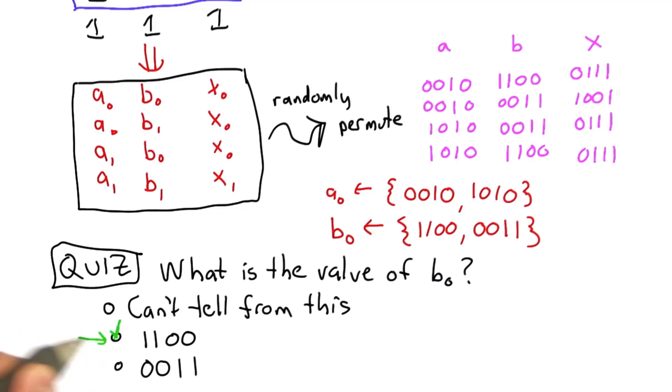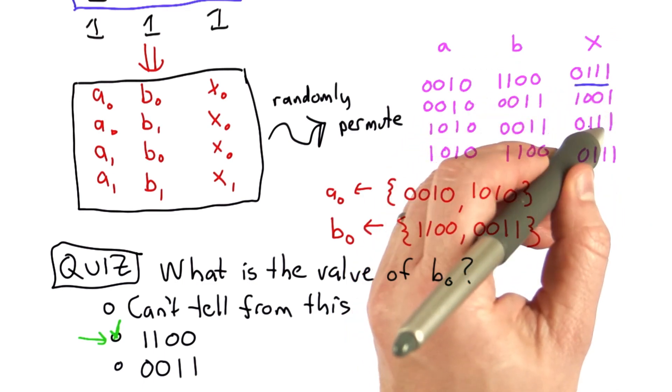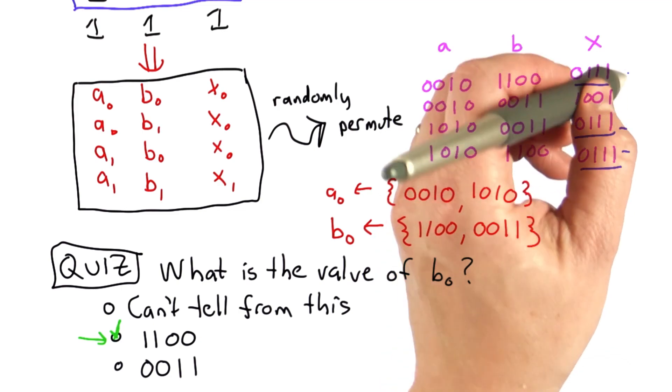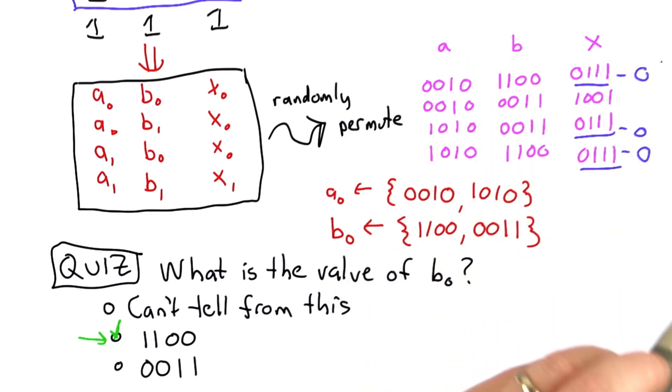And the answer is you can, that it must be 1100. The way to see that is if you look at the x values, while there are 3 that match 0111, those must correspond to the output where x equals 0, because we know an AND gate has 3 outputs that have the value 0.